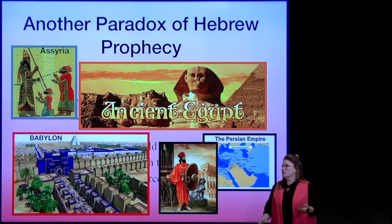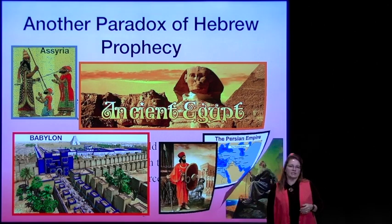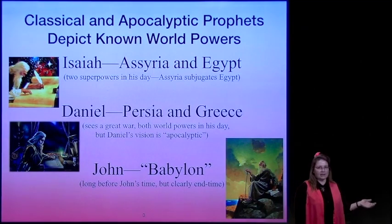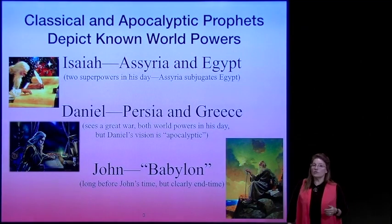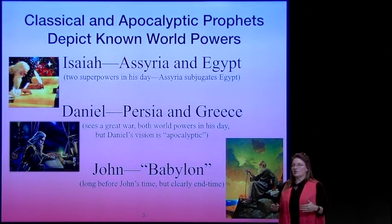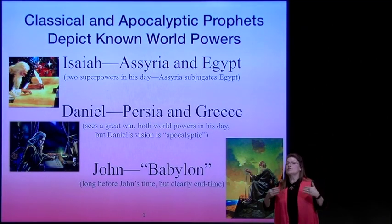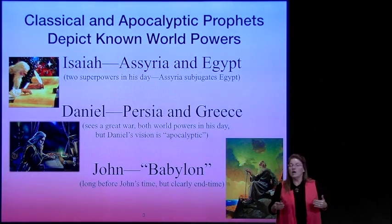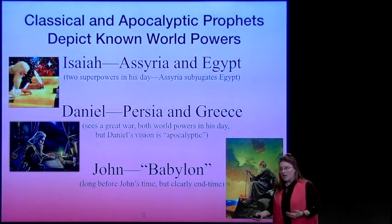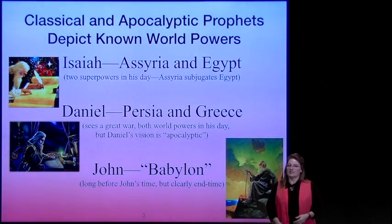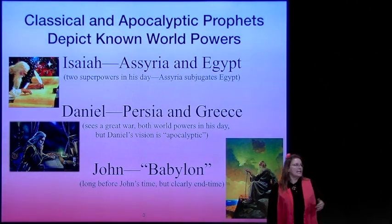Daniel would use Persia and Greece, things that were familiar in his day, even though Daniel would be prophesying—the angel told him—of the end time, not of his day.